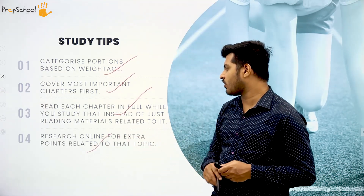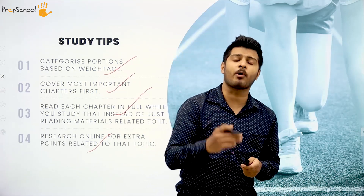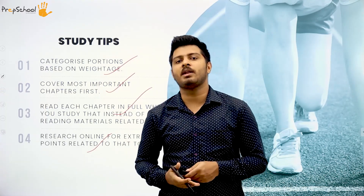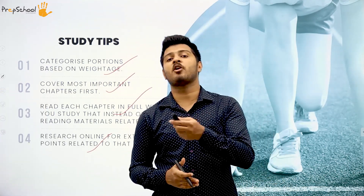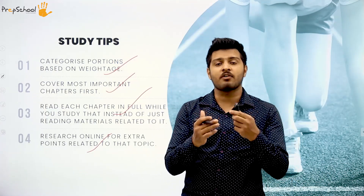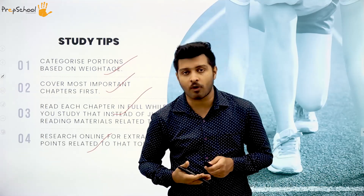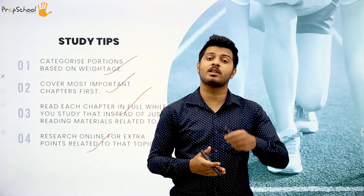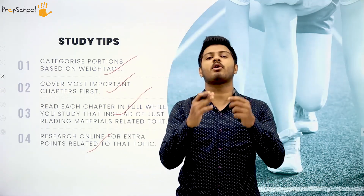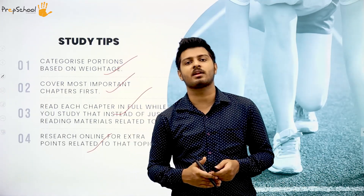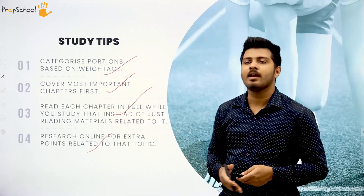Fourth tip: research online for extra points related to each topic. Sometimes when reading a textbook, the number of points is insufficient — for example, the textbook may have only three marks worth of content for a topic that appears as a five-mark question. To write a complete five-mark answer, you need extra points gathered from primary and secondary sources such as newspapers, magazines, and online resources.